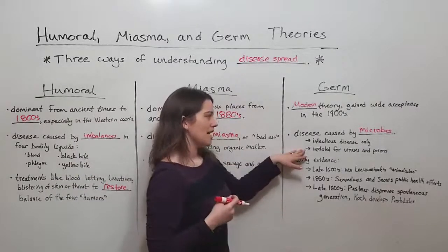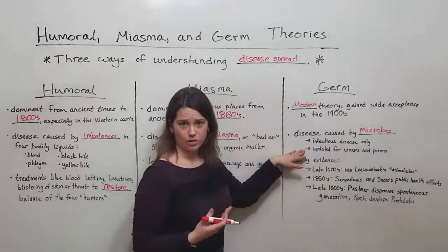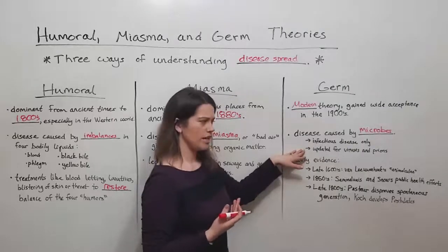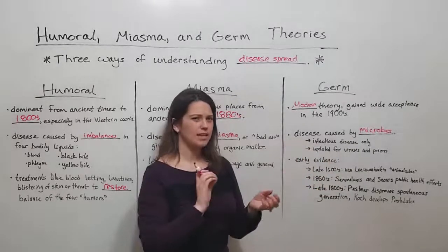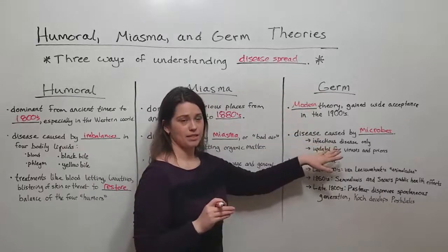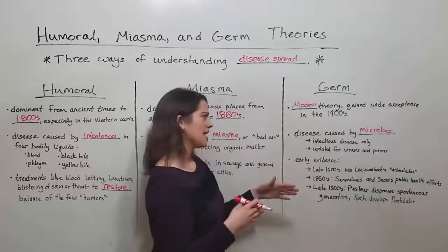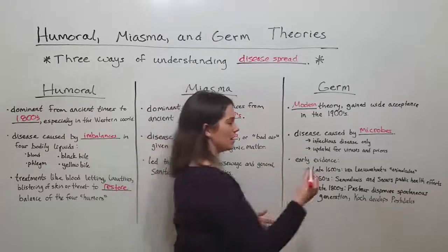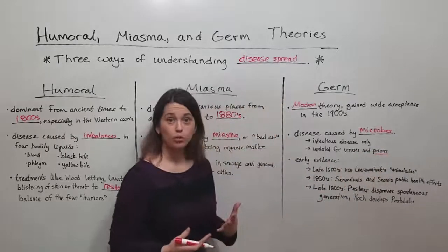Now this did have to be updated. So in the 1930s, when viruses were first being understood, viruses are not technically organisms. They're not alive. They're not considered microorganisms. And so the germ theory had to be updated to be infectious disease caused by microorganisms and viruses. It had to be updated again when prions were discovered, prions being infectious proteins.